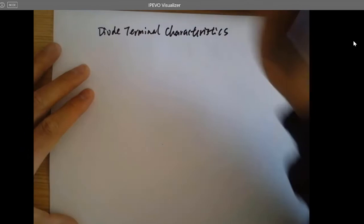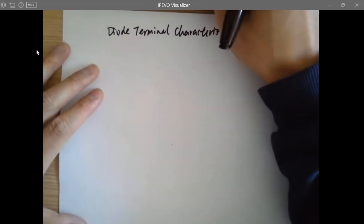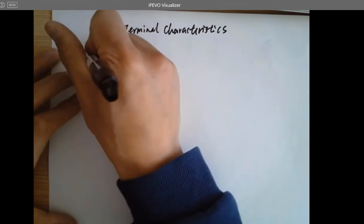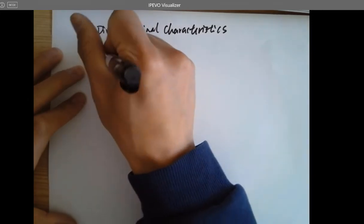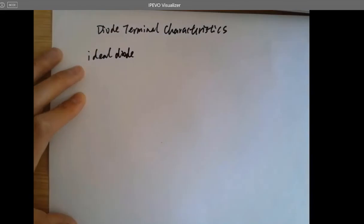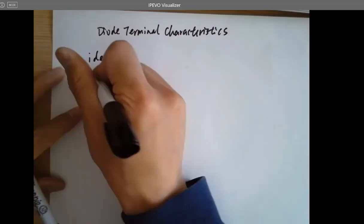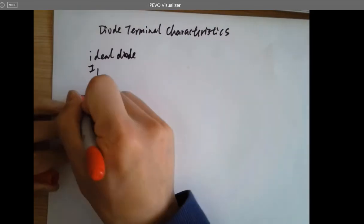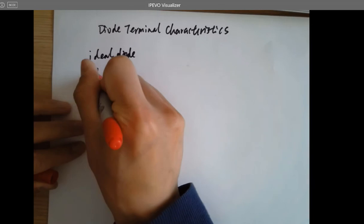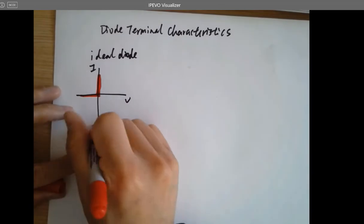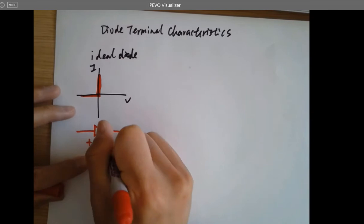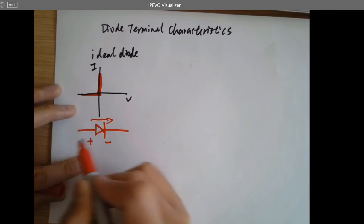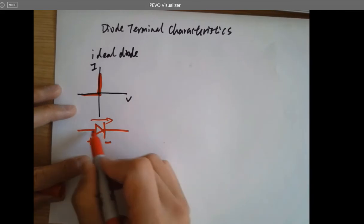In the homework assignments, if I say it's an ideal diode, that means the IV curve looks like this: whenever there is a positive voltage drop across the two terminals, the diode becomes conductive, the current flows through it — it performs like a wire.